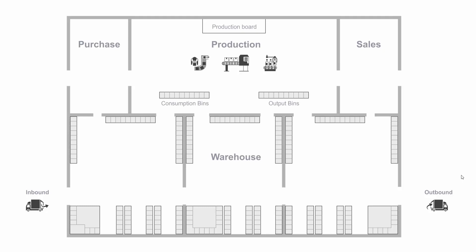It's set up on the location card in the field directed put away and pick. This is the location I'm working at — it's my production plant in this example, and I've defined different zones in my location in this plant.